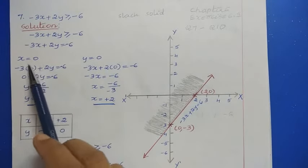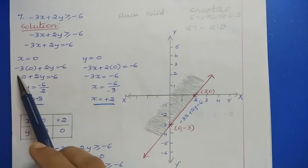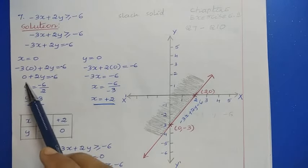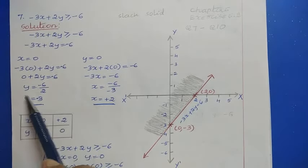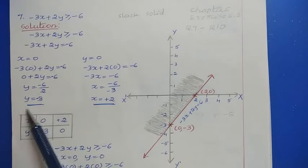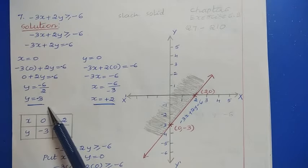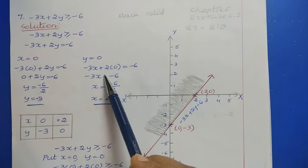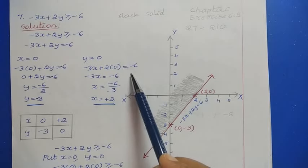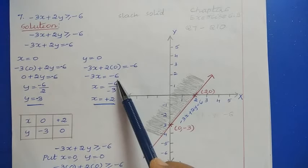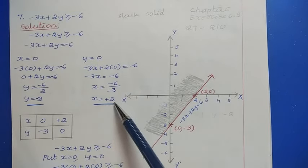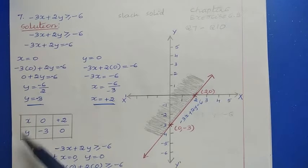If x = 0, substituting gives -3(0) + 2y = -6, so 2y = -6, giving y = -3. Then putting y = 0 gives -3x = -6, so x = -6 / -3. The negatives cancel and we get x = 2.